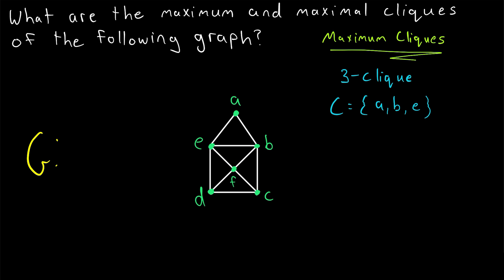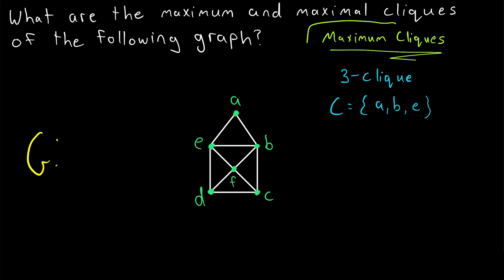So every triangle in this graph G is a maximum clique, and we see that there are many maximum cliques in our graph G. Because of how small this graph is, you probably could have found its maximum cliques more quickly using a less structured approach. But hopefully that example shows you a structured approach that gives you watertight reasoning to find the size of a maximum clique in a graph.